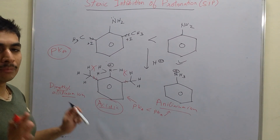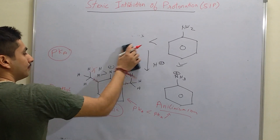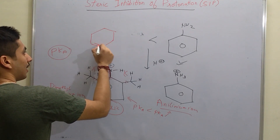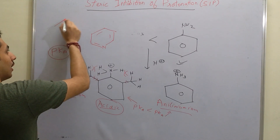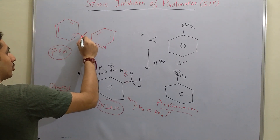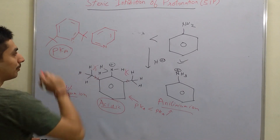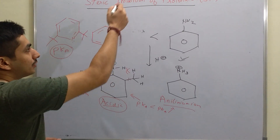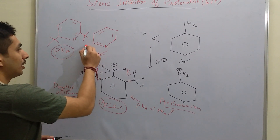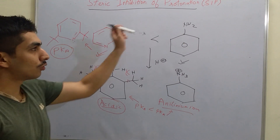Similarly, you can take one more example. If we have pyridine, and on the other hand we have pyridine with tertiary butyl groups on both sides — these tertiary butyl groups are very bulky, so this would make that pyridine less basic, because it will not undergo protonation due to Steric Inhibition of Protonation. The plain pyridine will be more basic than the pyridine with two tert-butyl groups. This is the whole concept of Steric Inhibition of Protonation, also known as SIP.